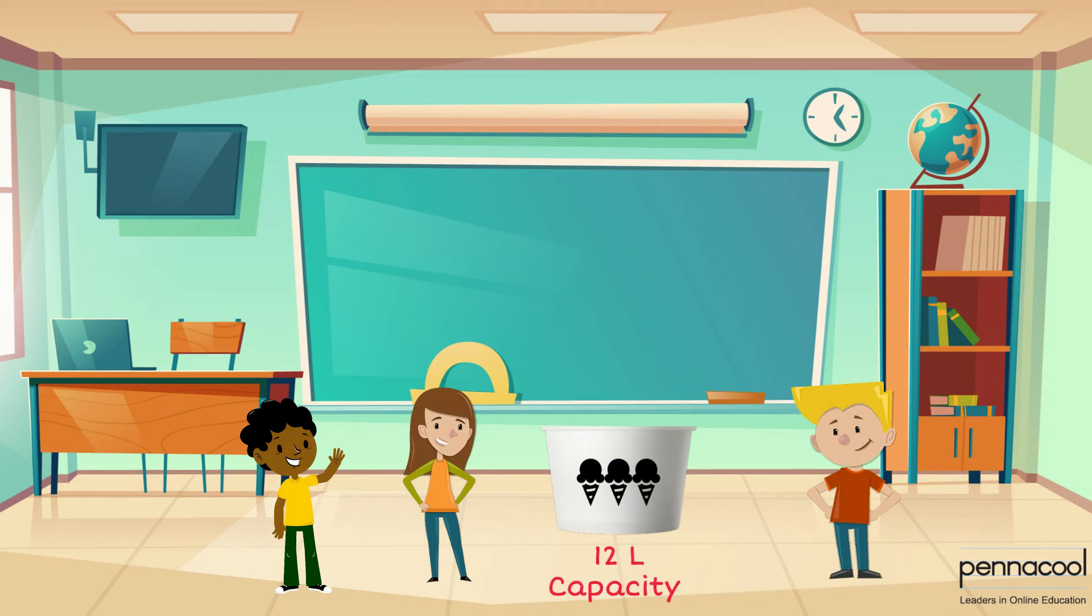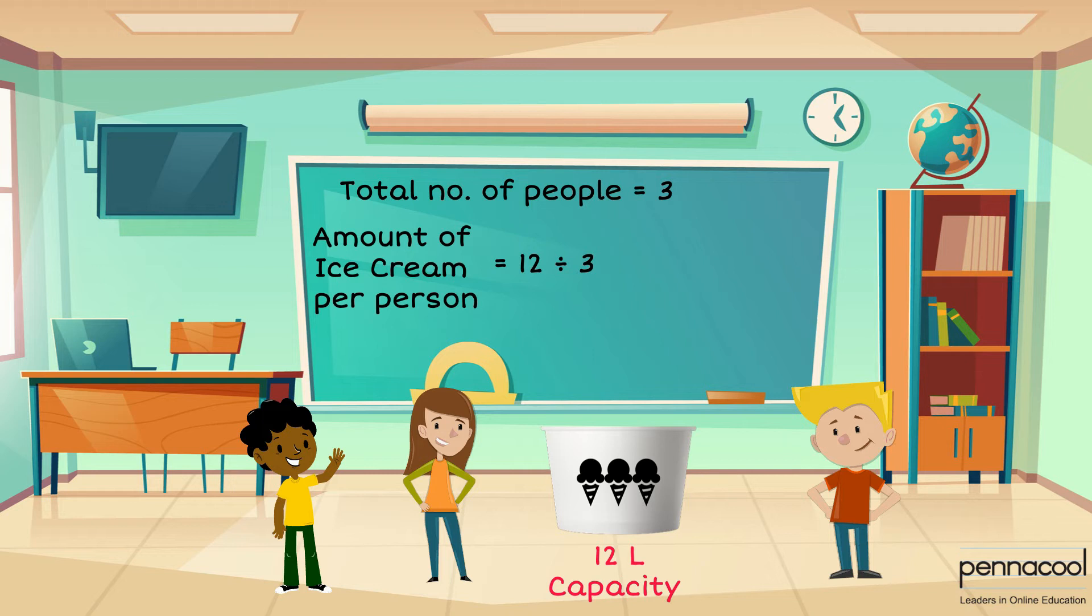Adrian is given a 12 litre tub of ice cream and is told to share it equally among himself and 2 other friends. Can we calculate how many litres of ice cream each friend gets? Adrian and his 2 friends all together make a group of 3. We must divide the 12 litres of ice cream into 3 equal groups. Each friend will get a total of 4 litres of ice cream.